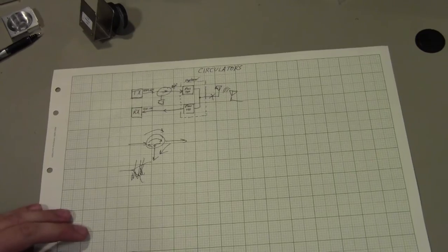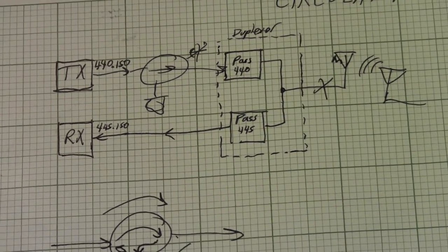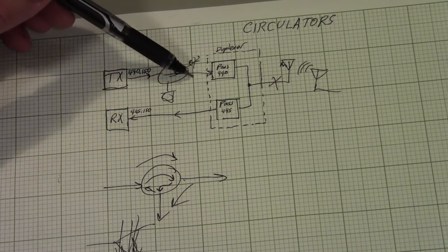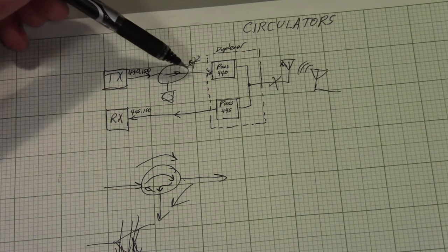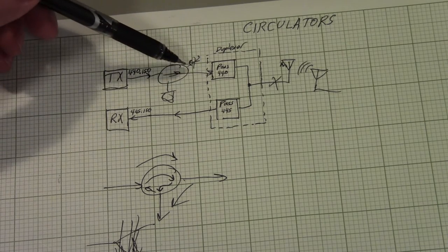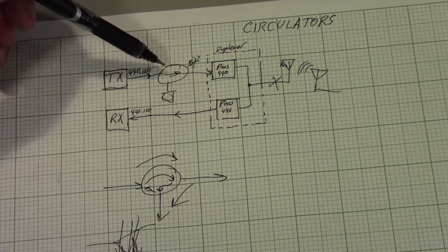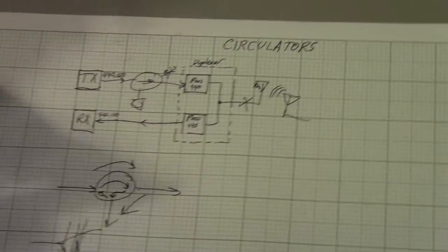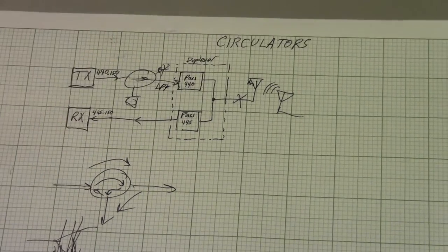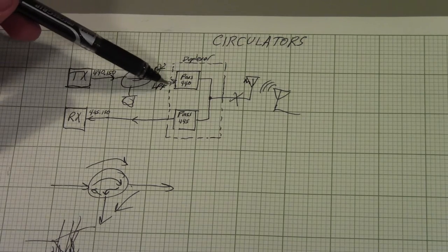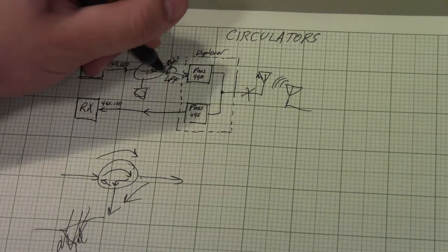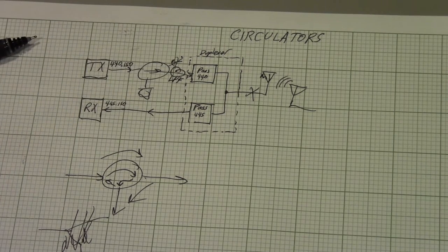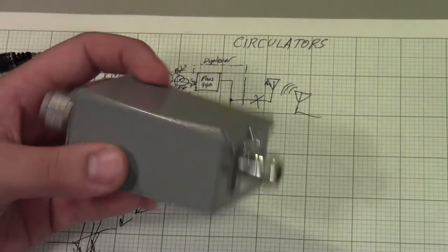There is one problem with circulators as I've presented them: circulators are not at all linear devices. When you take a transmitter operating at 440 megahertz and pass it through the circulator, it doesn't pass through unadulterated — the circulator tends to generate harmonics of whatever signal you pass through it. So right after the circulator, you need to put a low-pass filter. It doesn't need to be a cavity filter or profoundly good, but you do need some rolloff to prevent your second, third, and fourth harmonics from getting through.